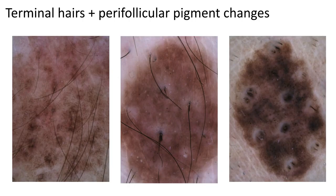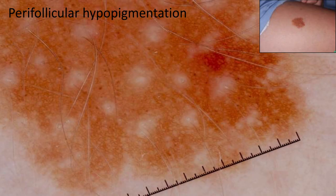Finally, terminal hairs and perifollicular pigment changes. We see thickened, darker hairs present in congenital nevi, and perifolliculally we can see pigment changes — that can be hyperpigmentation, hypopigmentation, or a combination of both. Another example shows thickened, darker terminal hairs and perifollicular hypopigmentation.